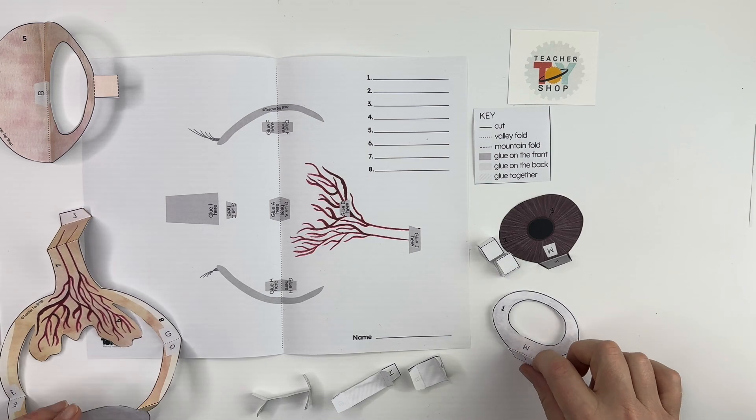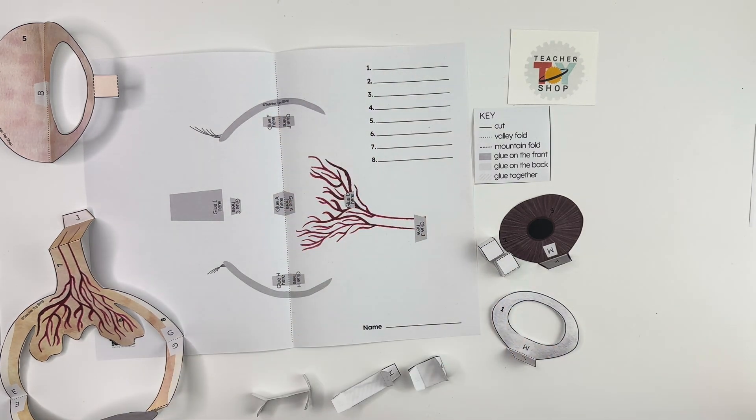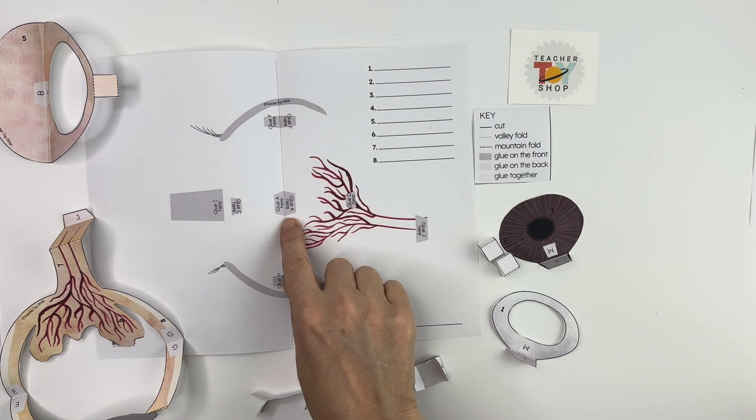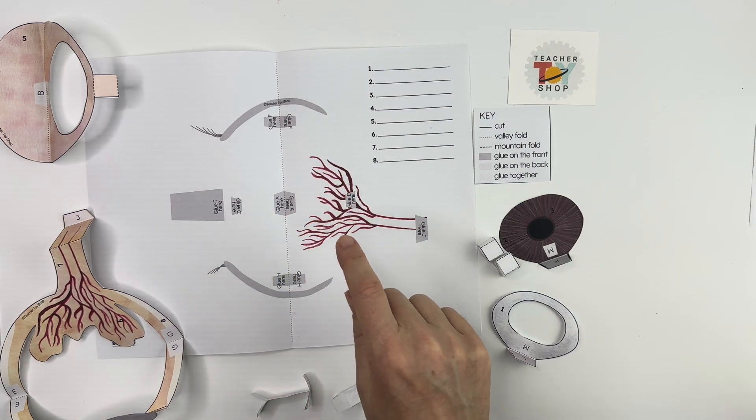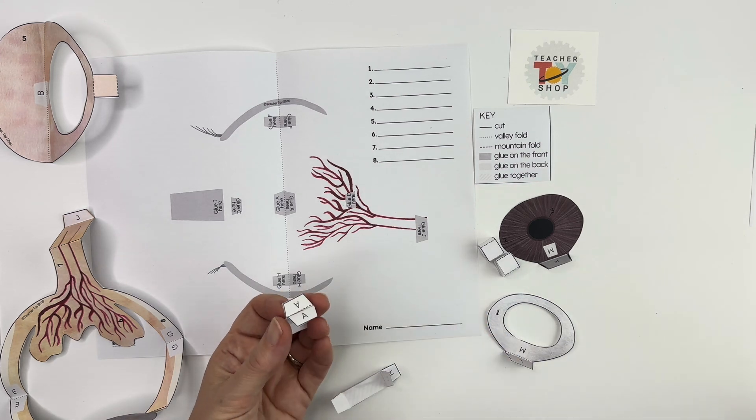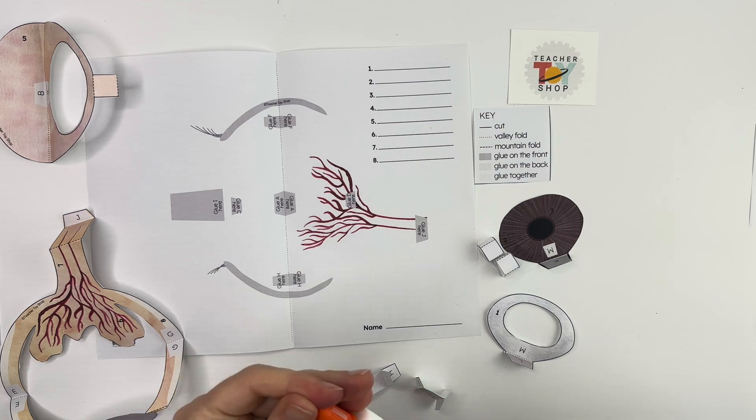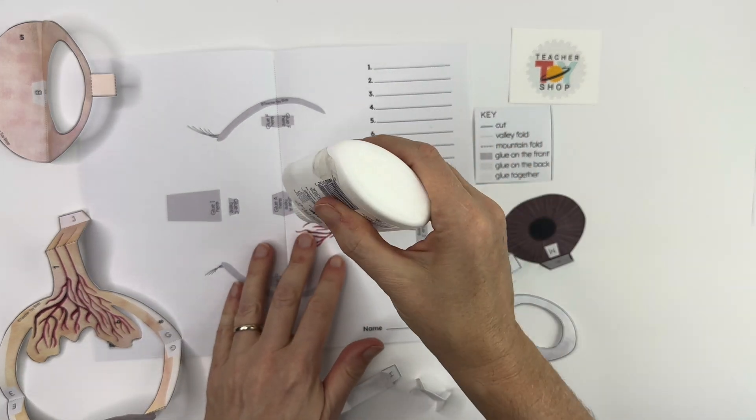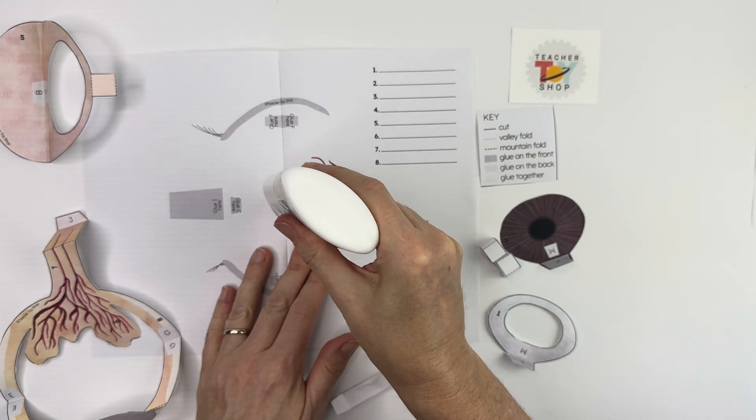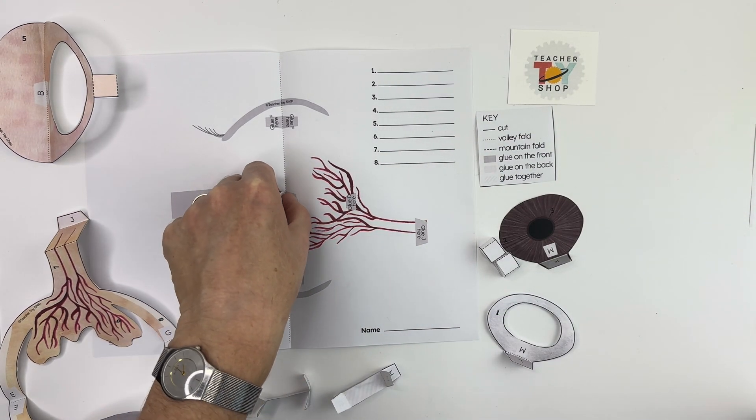Okay so why don't we get started. This one I've done a valley fold down the center and then the first thing you do is you follow the order of the letters. So A is the first letter in the alphabet. It says glue A here so this piece right here has A's on it. So I'm going to take my glue. You can use any kind of glue or glue stick that you like, any kind of school glue. You could use tape as well if you prefer. So A gets glued there.